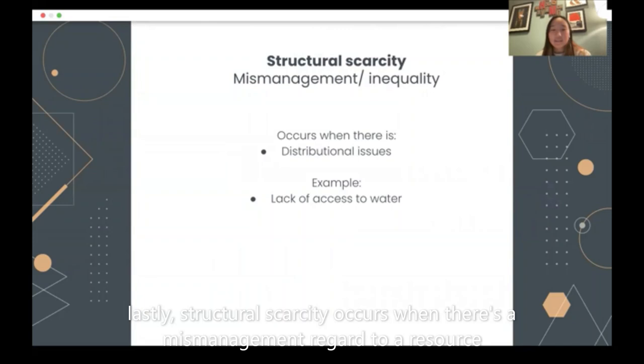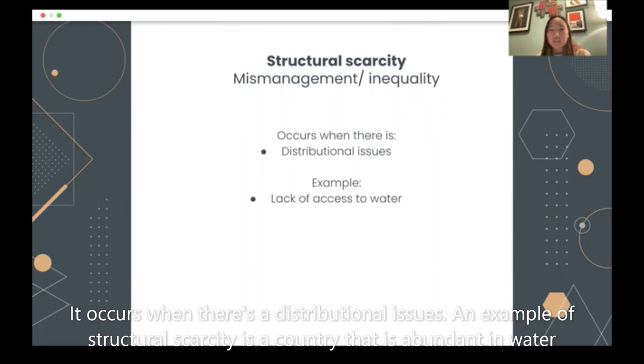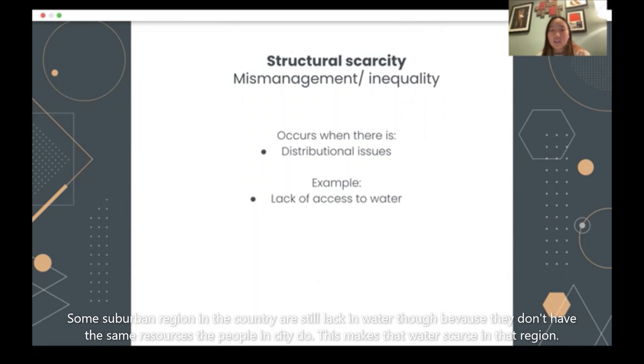Lastly, structural scarcity occurs when there is mismanagement with regard to a resource. This can occur when there are distribution issues. An example of structural scarcity is a country that is abundant in water. Some suburban regions in the country are still lacking water because they don't have the same access to this resource that people in the city do. This makes water scarce in that region.